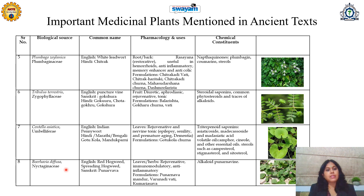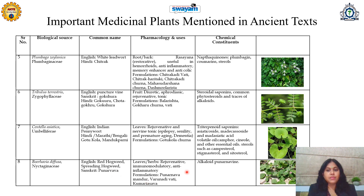The next important traditional medicinal plant is Boerhavia diffusa, belonging to family Nyctaginaceae. In English, it is called as Red Hogweed or Spreading Hogweed, and in Sanskrit, it is known as Punarnava. Its name itself explains that it gives new life — it is rejuvenative in nature. Its leaves and the whole herb are rejuvenative, immunomodulatory, and anti-inflammatory, due to the presence of alkaloids, especially Punarnavin. Its formulations are Punarnava Mandur, Varunadi vati, and Kumari Asava.